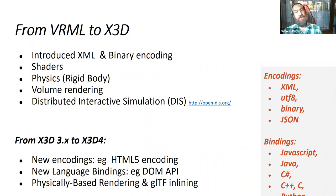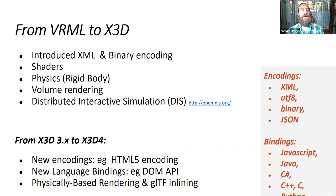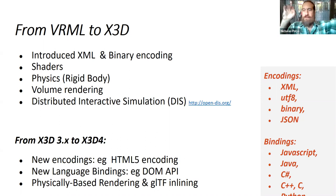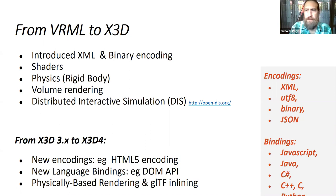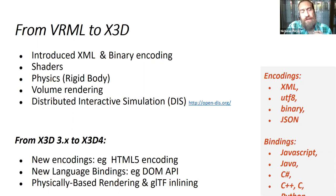When we went from VRML to X3D, there are a lot of new features and ways to author them. We introduced new encodings — XML and binary. We introduced shaders, and we're seeing a lot of great work with GLSL shaders in X3D. Rigid body physics, volume rendering, and distributed interactive simulation — basically a way to tie together remote clients in a consistent multi-user world, something the military uses quite a lot. Going from 3.x to 4, we're adding HTML encoding, new language bindings, and DOM API support.